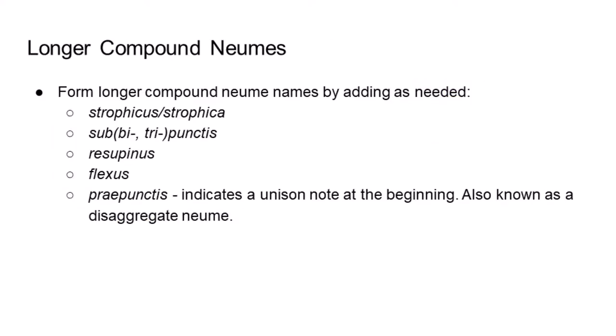Longer compound neumes are described in the same manner, with the adjective strophicus or strophica, subpunctus, resupinus, or flexus added to the basic neume name, along with prepunctus resupinus to indicate a unison note at the beginning, which is also called a disaggregate neume in English.